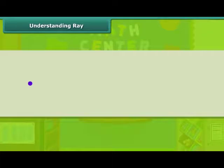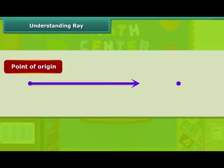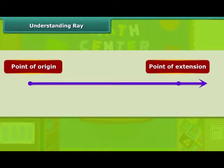Geometrically, we call the fixed point as the point of origin and extension as its direction of traveling. We name a ray also by two points: a point of origin and a point before the arrow.